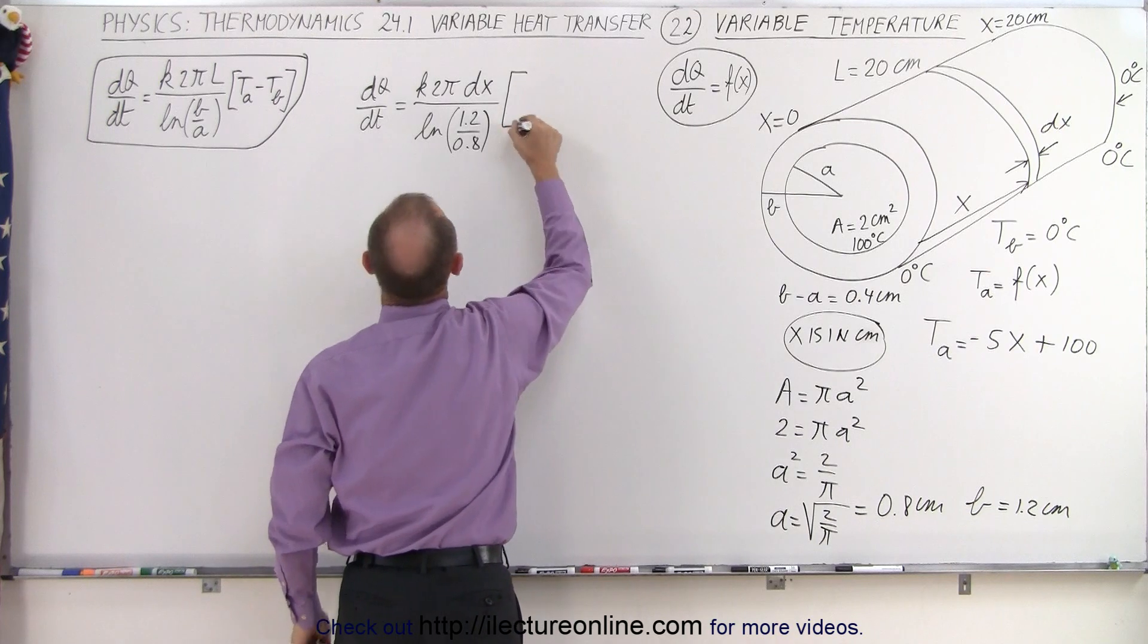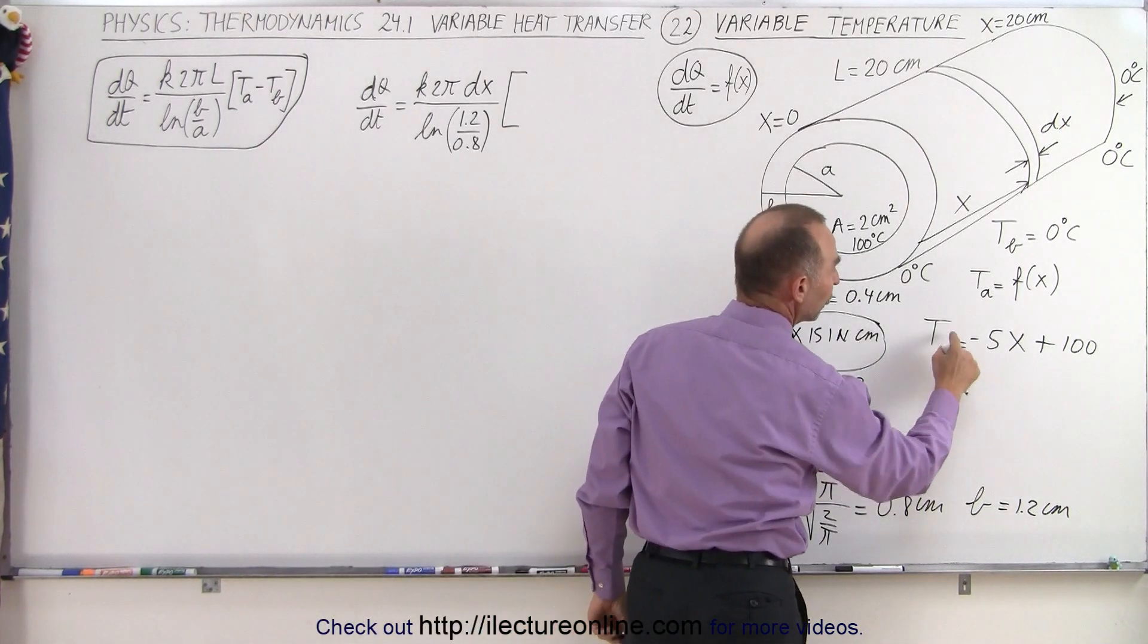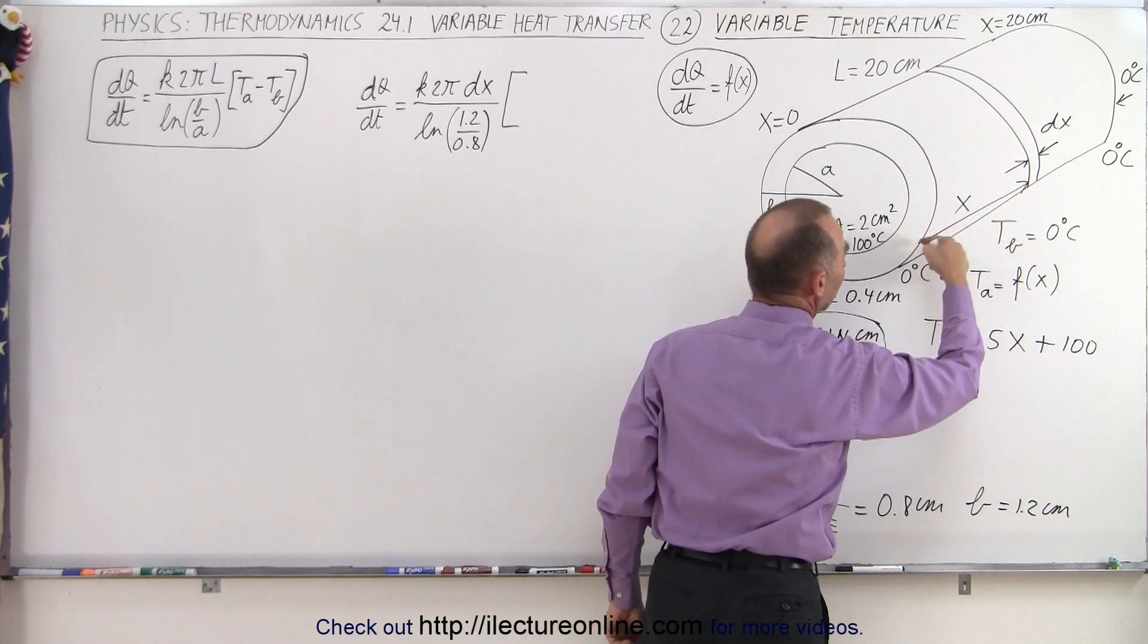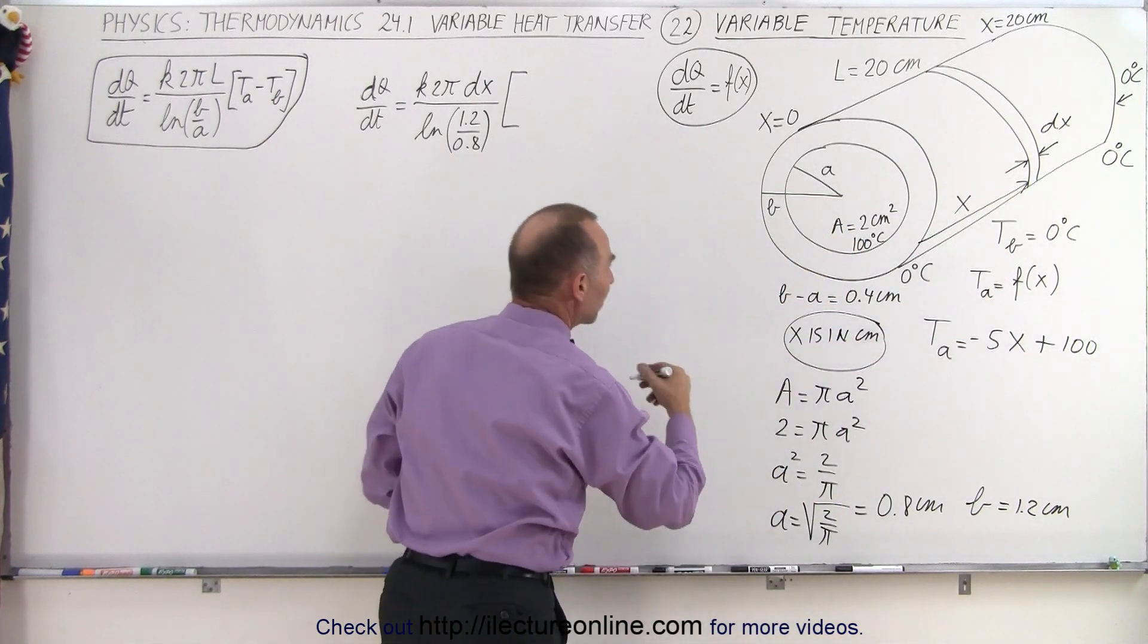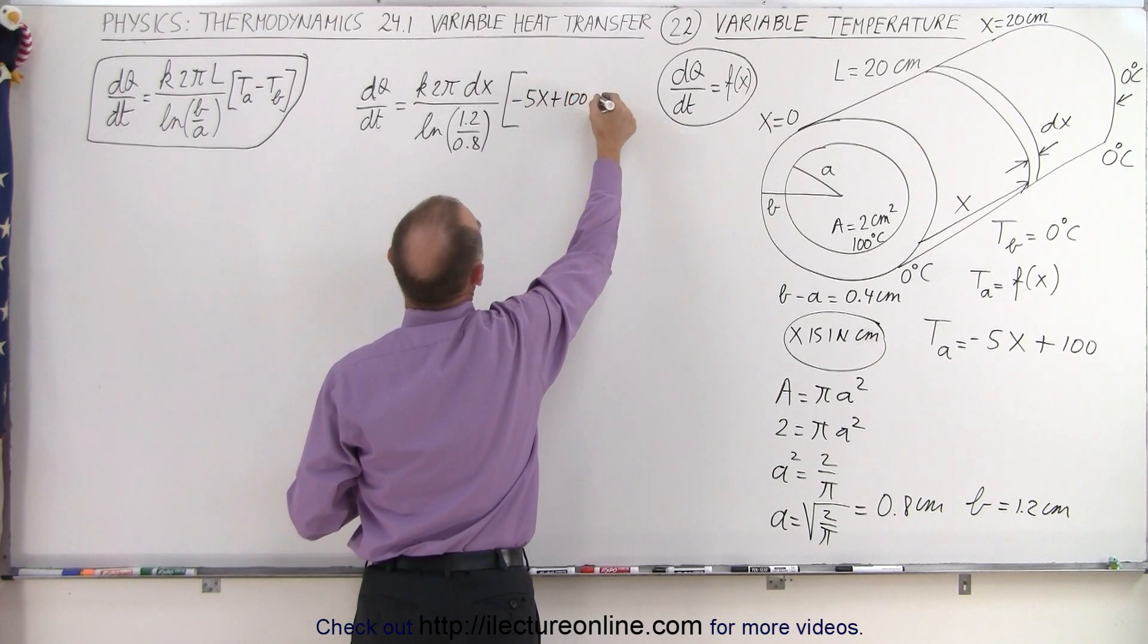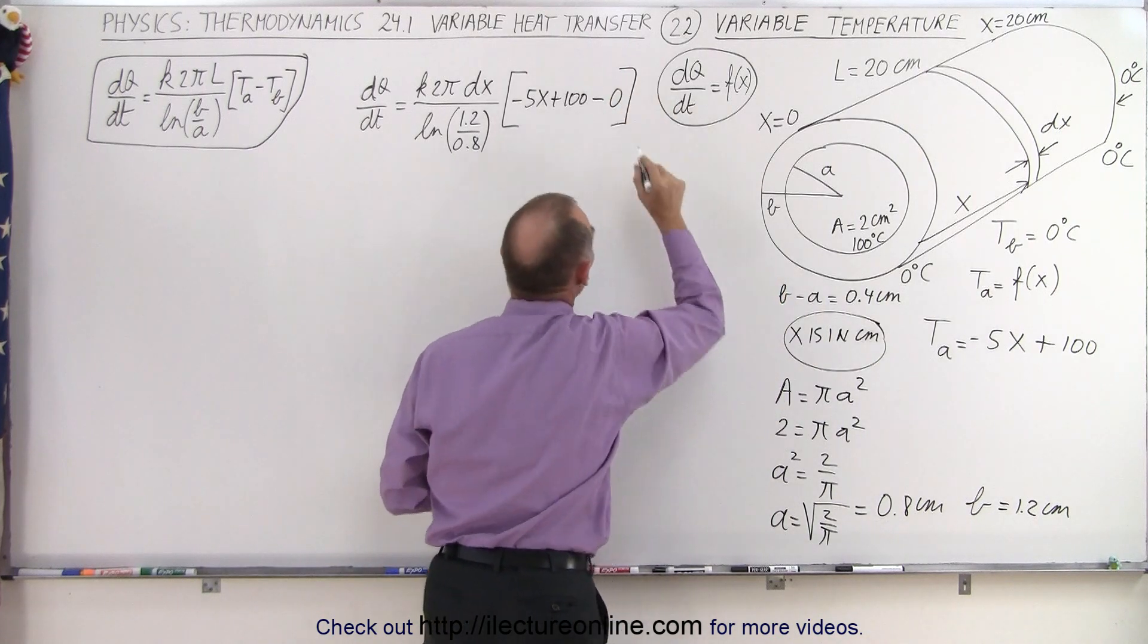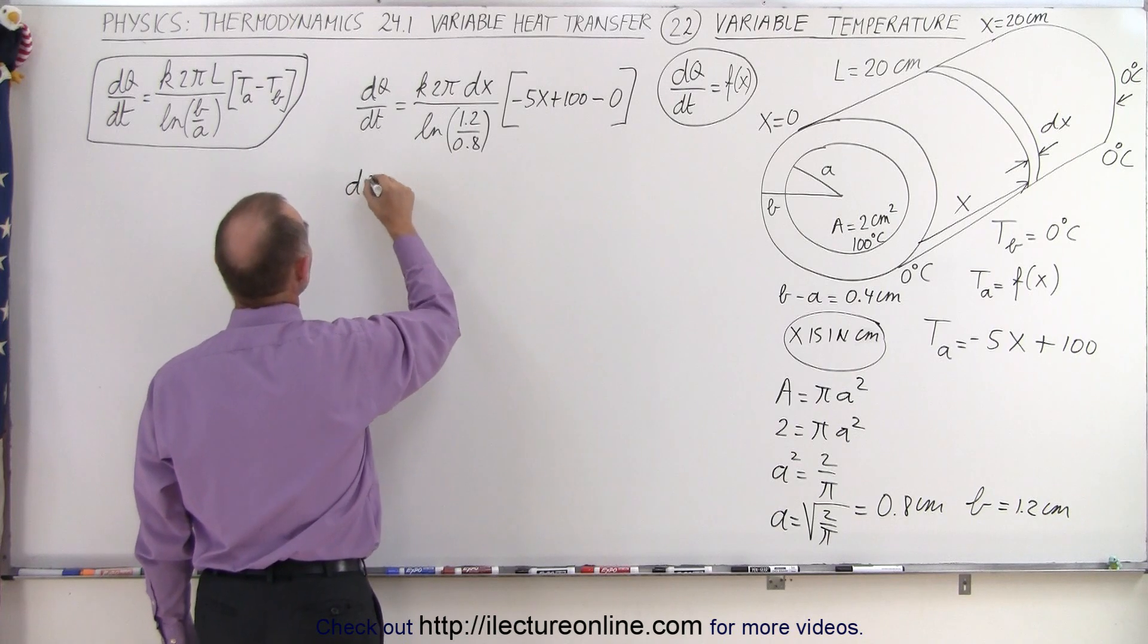And then we have the temperature difference, T at A. Well, T at A, which is a function of X, can be expressed as minus 5X plus 100, where X is the distance from the front to that area, that little segment there. So that's T at A, which is minus 5X plus 100, and subtract from that the temperature of B, which is the outside, which is always equal to 0.